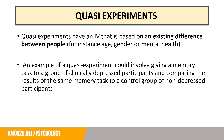Similarly, if you wanted to look at whether males or females have a generally higher fitness score, you couldn't dictate as a researcher what group participants went into — that would already be decided by whether they are male or female. So remember, quasi-experiments look at an existing difference between people.